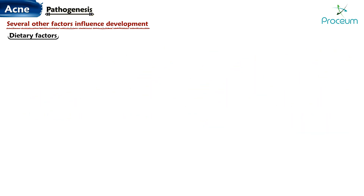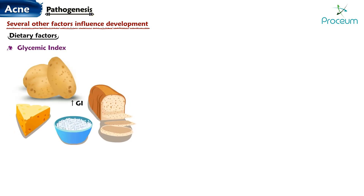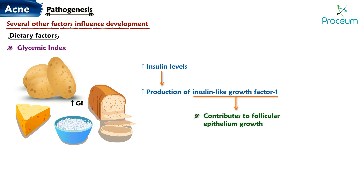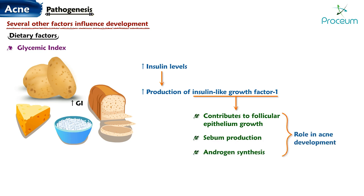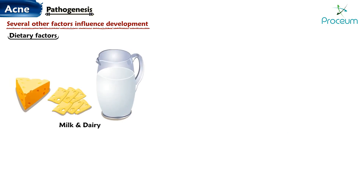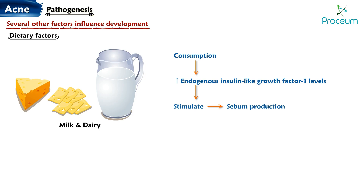Dietary factors. Glycemic index: diets high in glycemic index foods can elevate insulin levels, leading to increased production of insulin-like growth factor 1 (IGF-1). IGF-1 contributes to follicular epithelium growth, sebum production, and androgen synthesis, all of which play a role in acne development. Milk and dairy: consumption of milk and dairy products can elevate endogenous IGF-1 levels, which can further stimulate sebum production and androgen synthesis, contributing to acne formation.